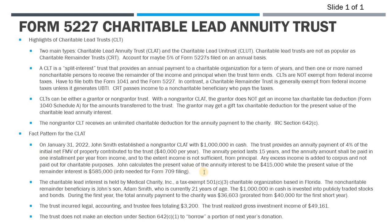In our example, the income was in excess of the charitable payment, so the trust does actually have to pay some taxes for the year. The fact pattern: on January 31st, 2022, John sets up this non-grantor CLAT and puts a million dollars in cash into the trust. The trust provides an annuity payment of 4% of the initial net FMV — that's $40,000 per year — lasting 15 years. The payments are made once a year from income, and to the extent there's not enough income, the trustee has to make payments from principal.